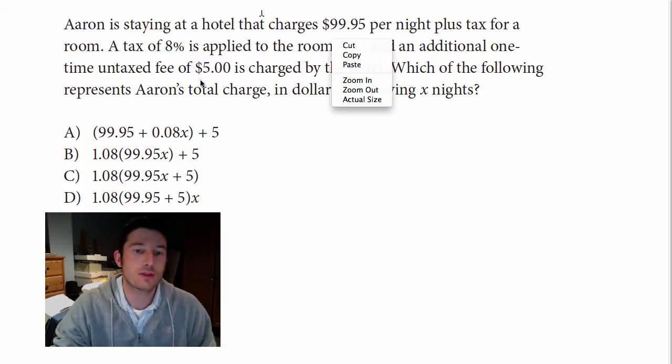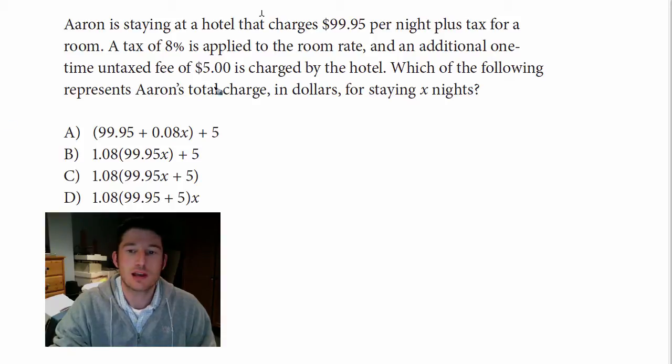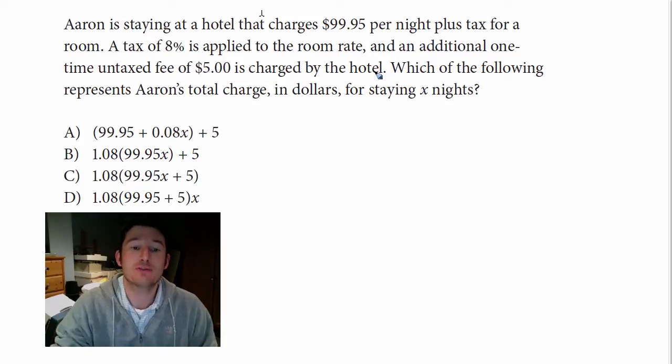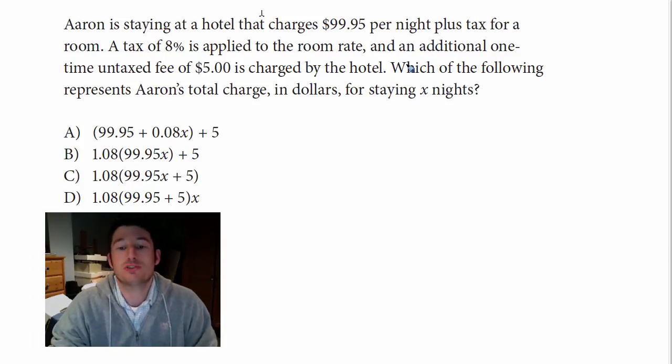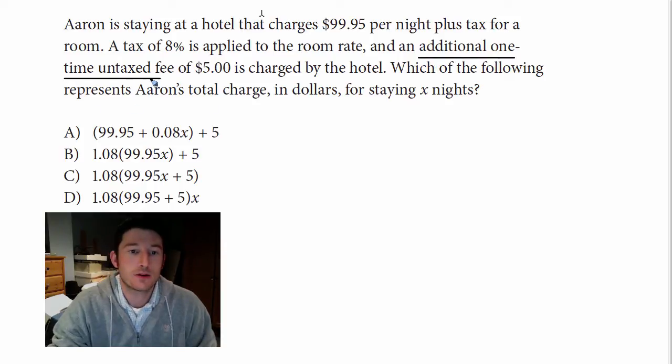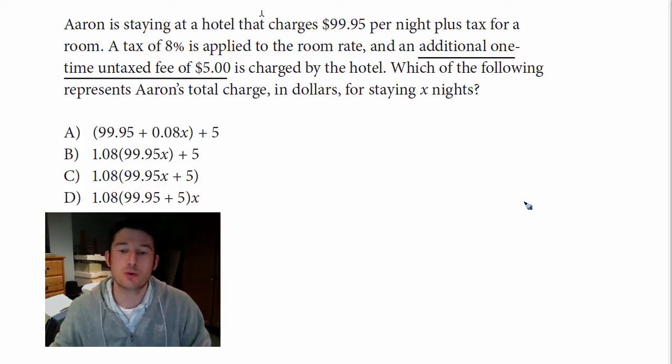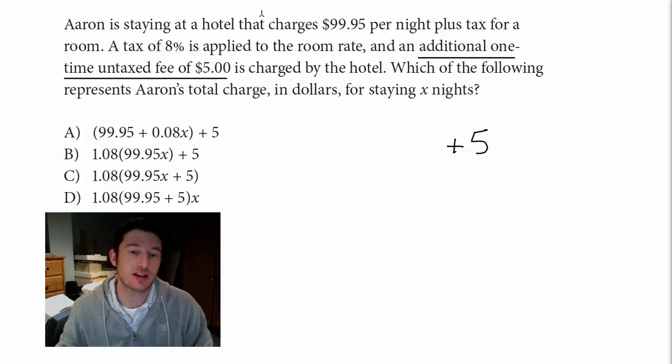All right. Well, one of the things that I tell my students to look out for, especially when doing these word problems, is one of the dead giveaways on how to assign values is anytime they do a one-time charge, an additional surcharge. I'll underline it here - one-time untaxed fee of $5. So when you have to come up with this equation, no matter what, there's going to be plus 5 on the outside. It's untouched. So the nice thing about that, I can get rid of two answers right away.